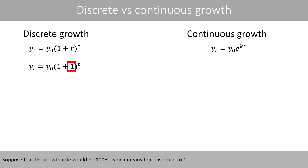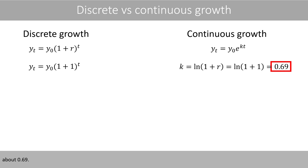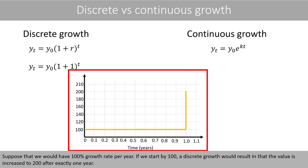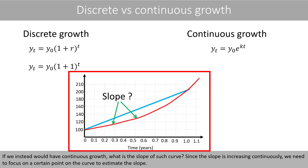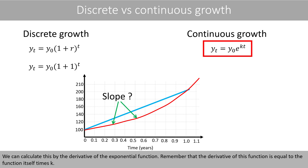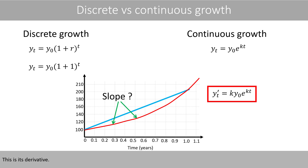Suppose that the growth rate would be 100%, which means that R is equal to 1. The corresponding value of K would then be about 0.69. With a 100% growth rate per year and a starting value of 100, a discrete growth would result in the value increasing to 200 after exactly one year, and the growth rate — or slope — during the first year would be 100. If we instead would have continuous growth, we need to find the slope of such a curve. Since the slope is increasing continuously, we calculate this using the derivative of the exponential function. The derivative of this function is equal to the function itself times K.